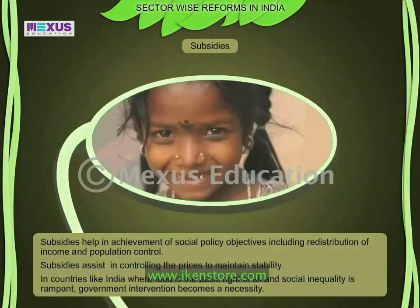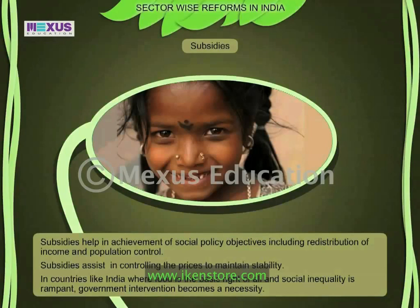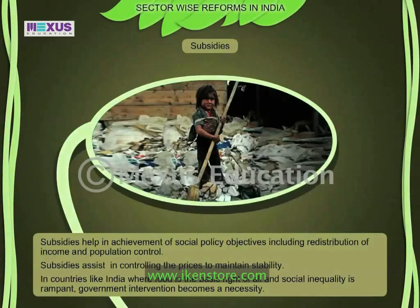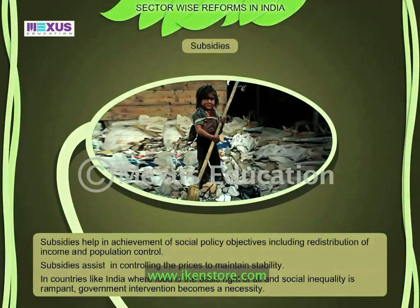Subsidies help in achievement of social policy objectives including redistribution of income and population control. Subsidies assist in controlling prices to maintain stability. In countries like India, where food is the basic right of all and social inequality is rampant, government intervention becomes a necessity.